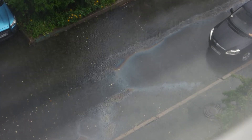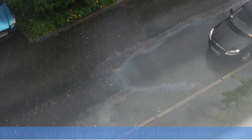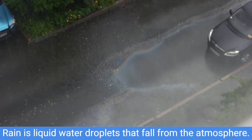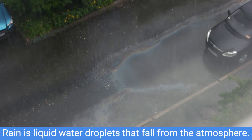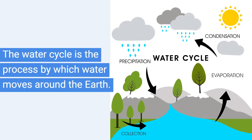Let us move on and talk about rainfall. Rain is liquid water droplets that fall from the atmosphere surrounding the earth. The water cycle is the process by which water moves around the earth. It starts when the sun heats up water in rivers, lakes, and oceans, turning it into water vapor through evaporation. This water vapor rises into the air and cools down, forming clouds in a process called condensation.